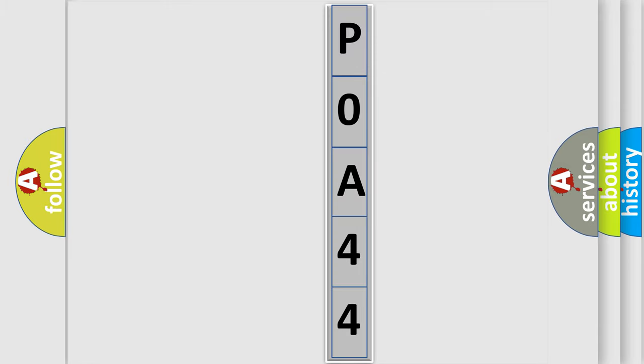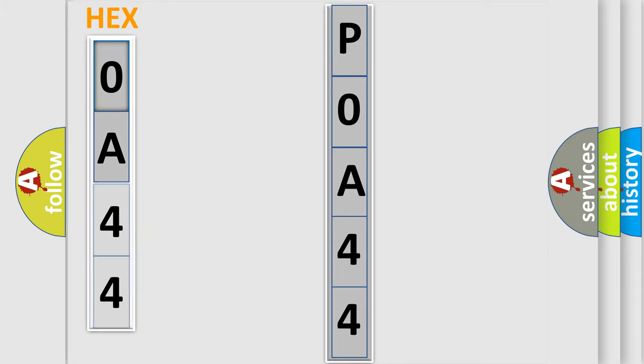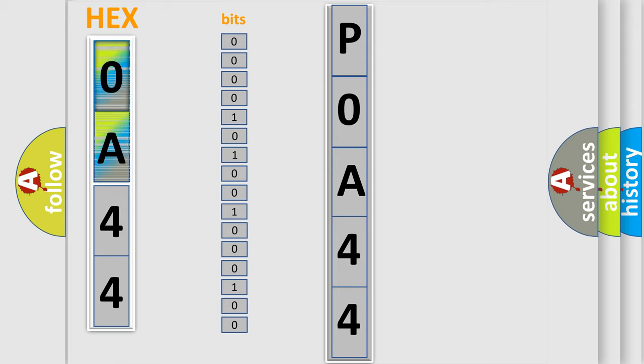You can move the video a bit further. The error code is split into two bytes consisting of 16 bits. One bit is the basic unit that each computer works with. The bit has two logical states: zero for low level, and one for high level.